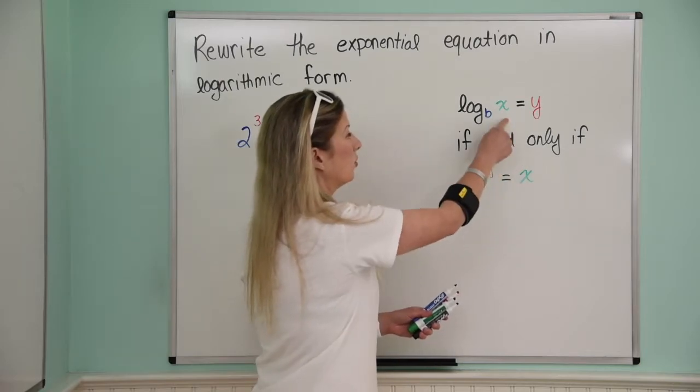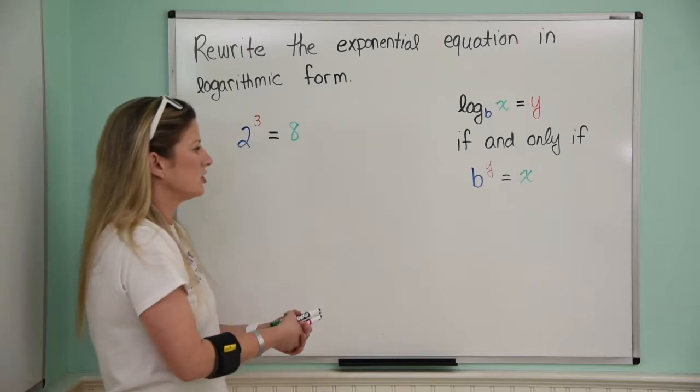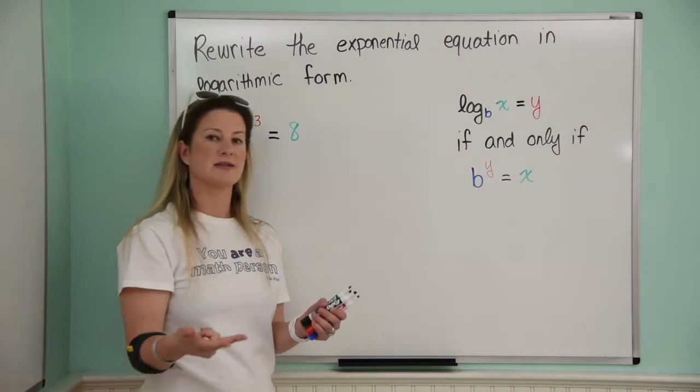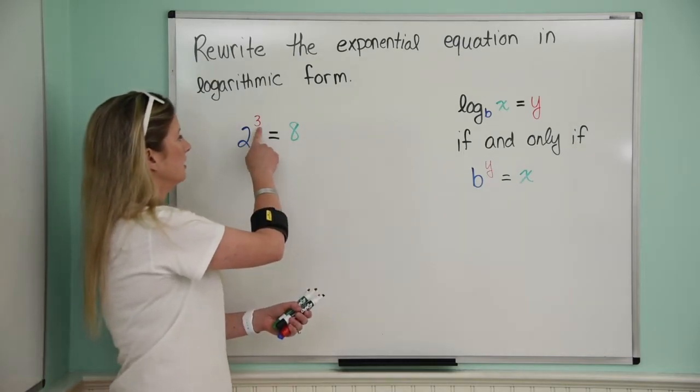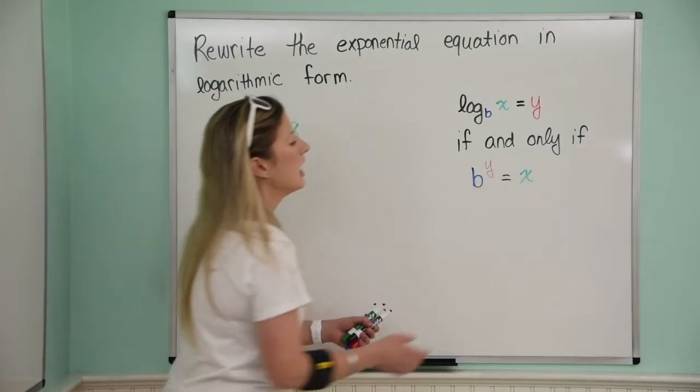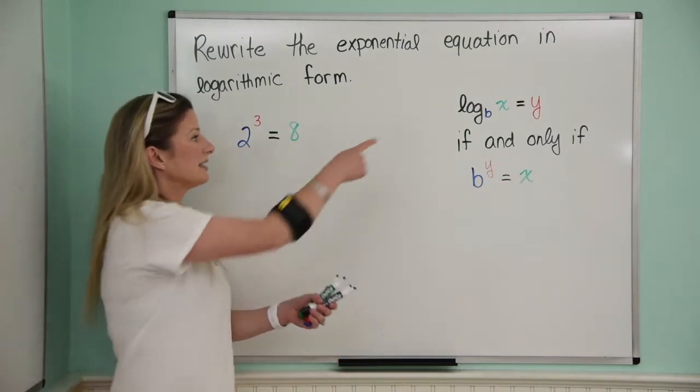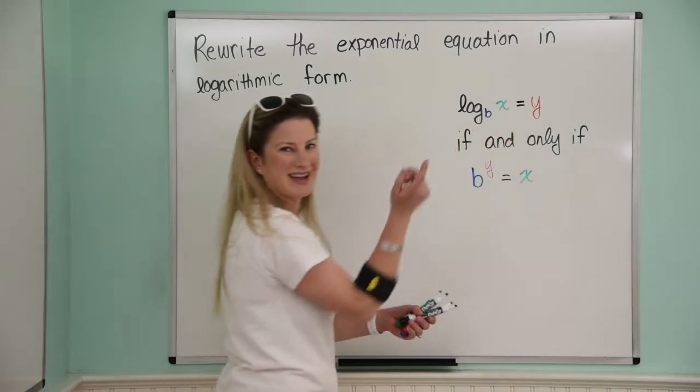So if we have it in this form, we can just kick it back to this form, right? All right, so what you're going to want to do is identify what your b, your y, and your x are, write them, and there's a reason I did it in color so you can see it a little bit better. See blue to the red equals the green, so blue to the red equals green. So we're going to just do that to be able to write it as log base blue of green equals red.